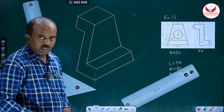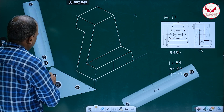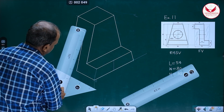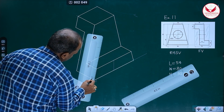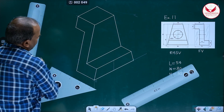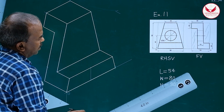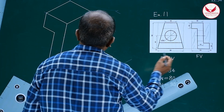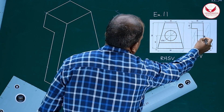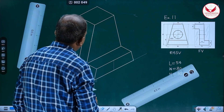Now only one thing is remaining — that hole. And for marking the hole, what we have to do? Before that, one edge is remaining. That hole is in this surface, and it is only in the length of 18 mm thickness. First mark its center — so how we can mark this center?